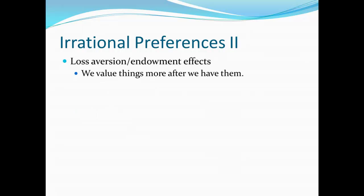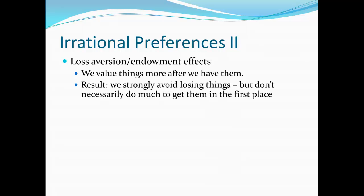A second type of irrational preference is loss aversion, what we call the endowment effect. We value things more after we have them. Once something becomes part of my endowment, I tend to attach a lot of value to it. Before I have it, I don't necessarily put a lot of value on it. As a result, I won't go to a lot of effort to get something in the first place, but I will go to a lot of effort to keep from losing something. In the extreme case, this helps explain things like hoarding — after I have something, it's very difficult for me to part with it.